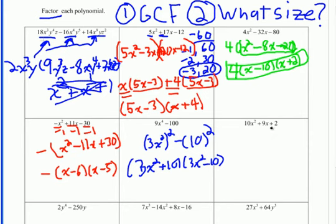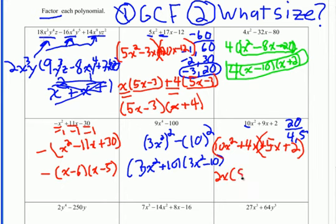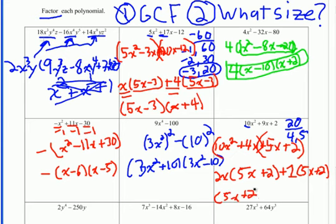There is no GCF here. It's a trinomial with leading coefficient 10 — a complex trinomial. So we do a times c: 10 times 2 equals 20. What multiplies to positive 20 and adds to positive 9? Both factors must be positive: 4 and 5. Keep the first term 10x², then split the middle term: plus 4x plus 5x, plus 2. Now factor by grouping — pull out 2x from the first group. The second group has a GCF of 1. Both groups share 5x minus 2, so pull that out, leaving 2x plus 1.